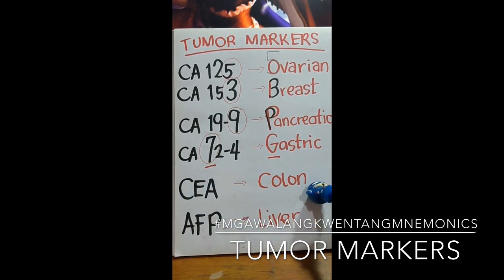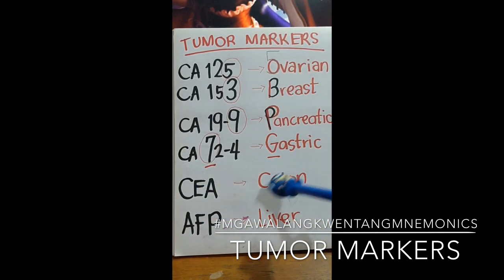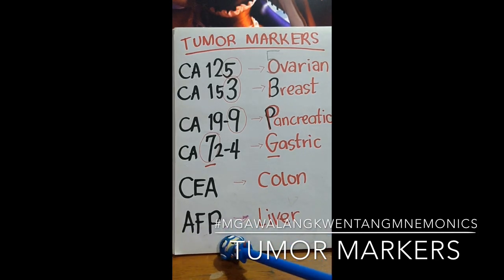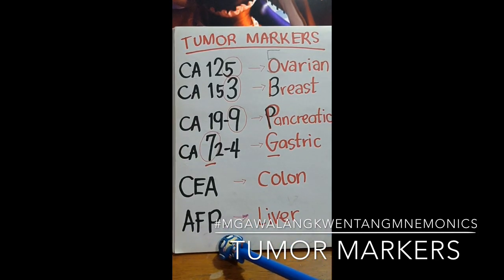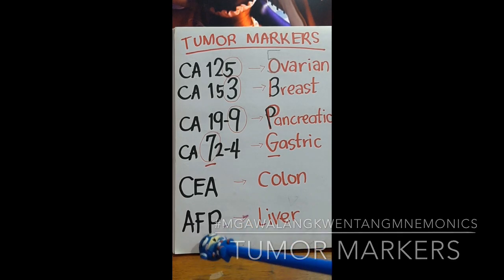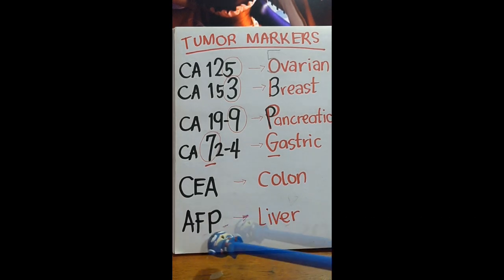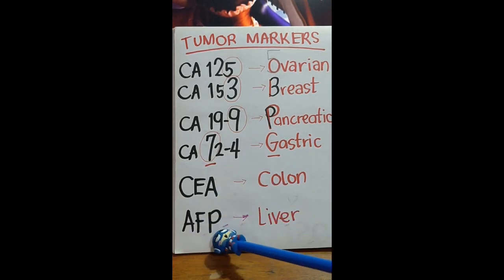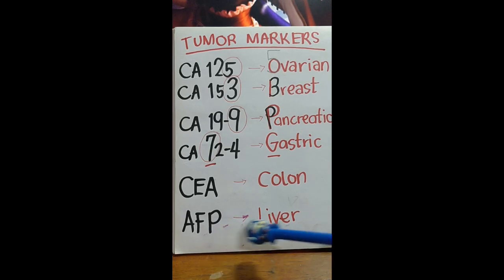We have CEA — carcinoembryonic antigen — for colon cancer. You can just associate the letter C in CEA with C for colon. So CEA is for colon cancer. Then we have AFP.